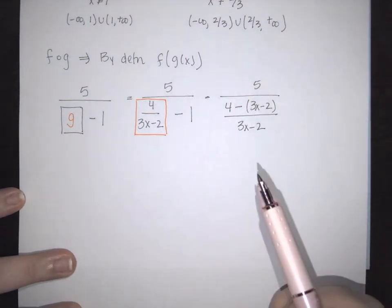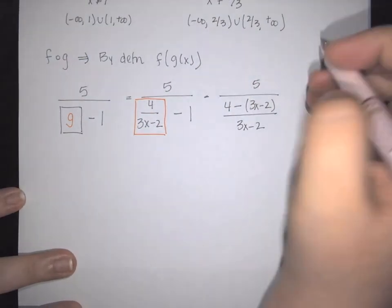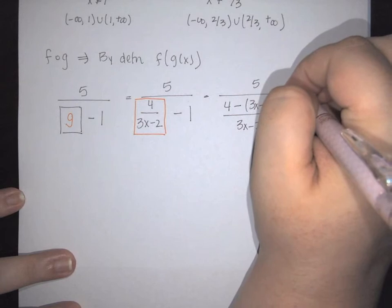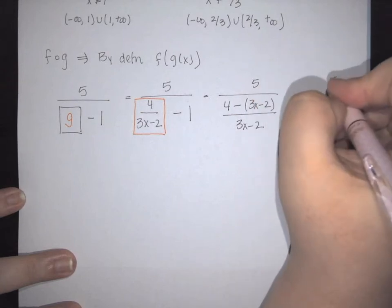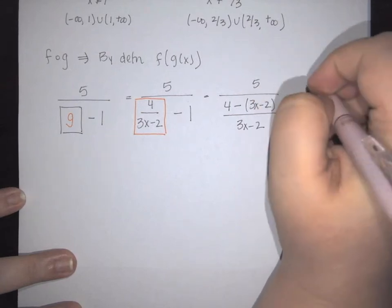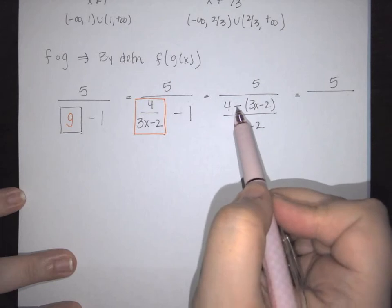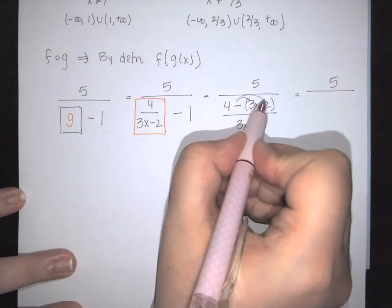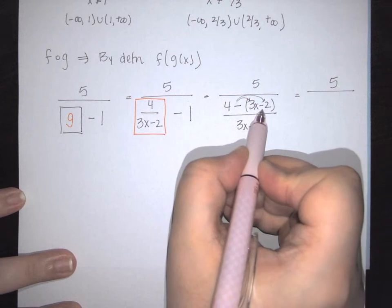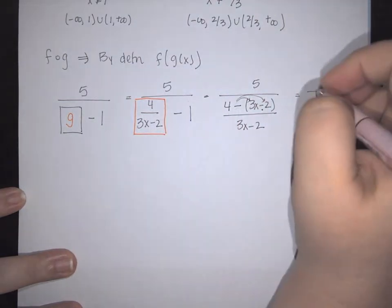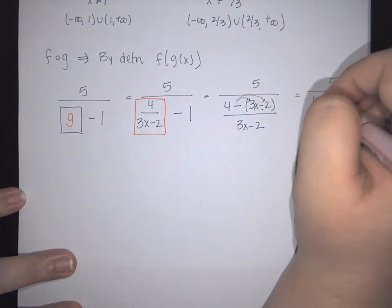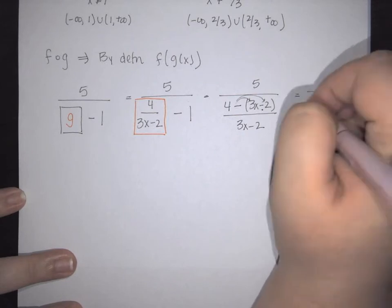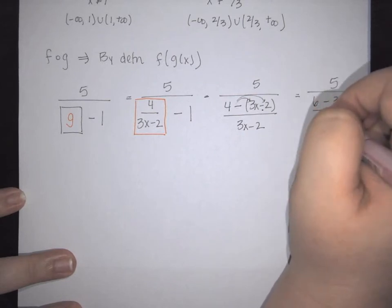We're going to go ahead and simplify that, and so in this case we're going to end up with 5 over, we're going to have the negative is going to be distributed into both, so my 2 right here becomes positive. So 4 plus 2 is 6, and then minus my 3x, and that whole thing is over the 3x minus 2.